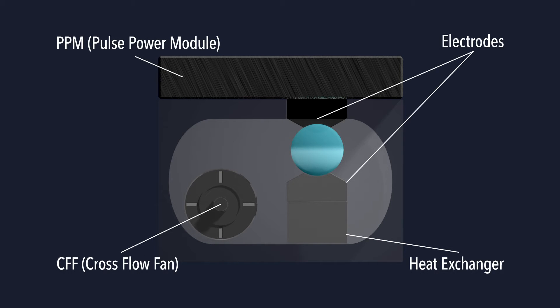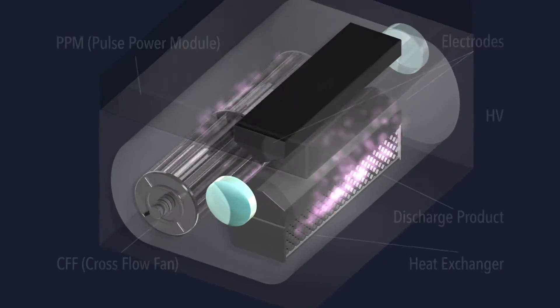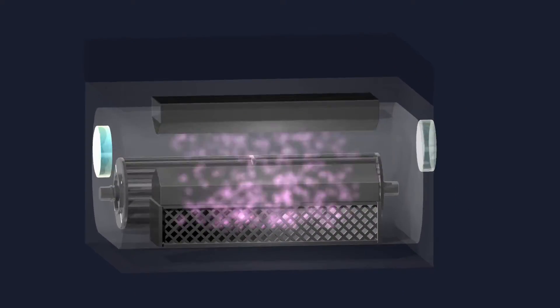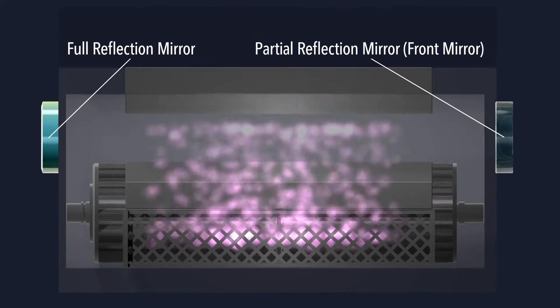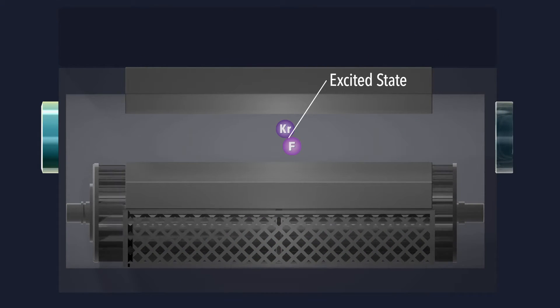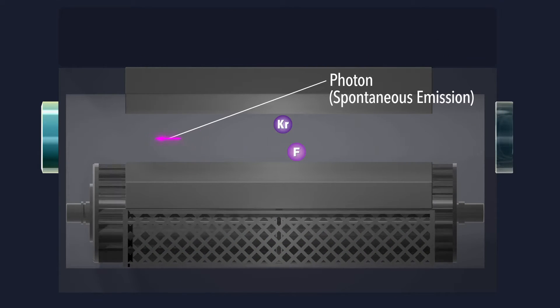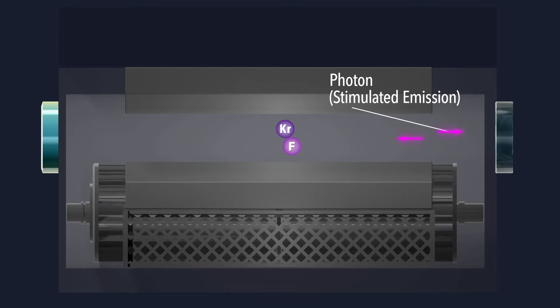Gigafoton's laser is a gas laser using krypton and fluorine balanced with neon as the laser medium. Photons are spontaneously released from atoms that are excited by a pulse discharge in a gas chamber. The photons excite and induce a stimulated emission. By reflecting and amplifying these photons, a strong laser is generated.